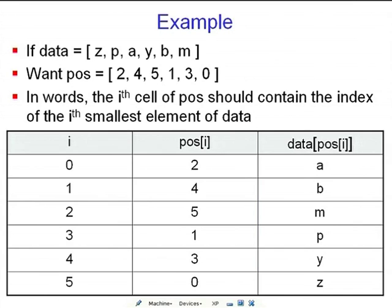Here is the example. Suppose the data is six strings — z, p, a, y, b, m. We want pause to be 2, 4, 5, 1, 3, 0. Why? Because the smallest element, a, appears at index 2; the second smallest, b, appears at index 4; so after 2 comes 4. The third smallest is m at index 5. In other words, the ith cell of pause should contain the index of the ith smallest element of data. That's the definition of the pause permutation. So if you look at data of pause i, you find a, b, m, p, y, z — in increasing order.